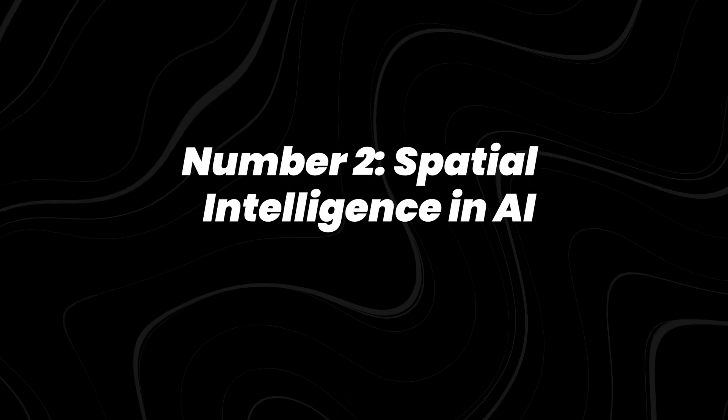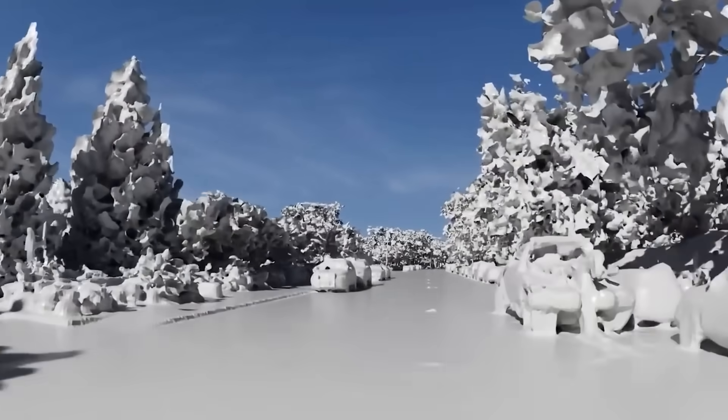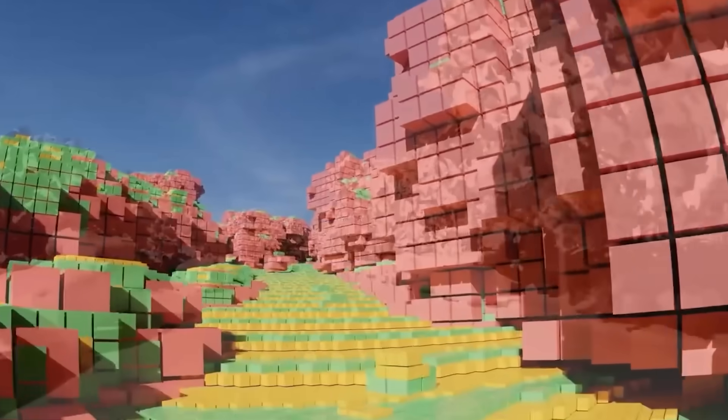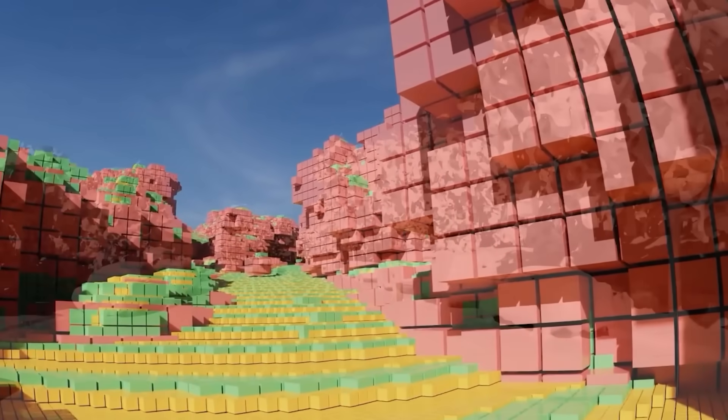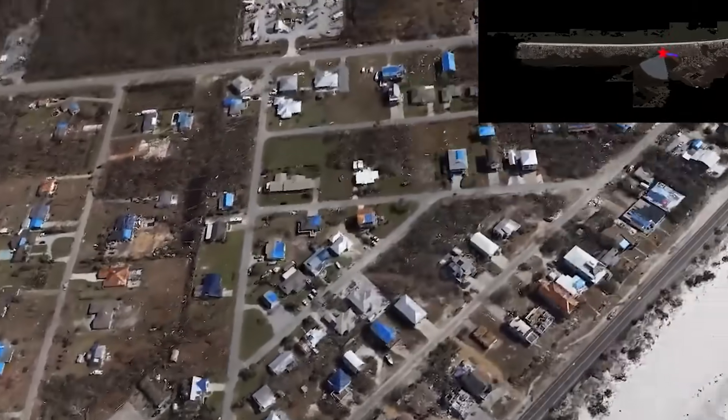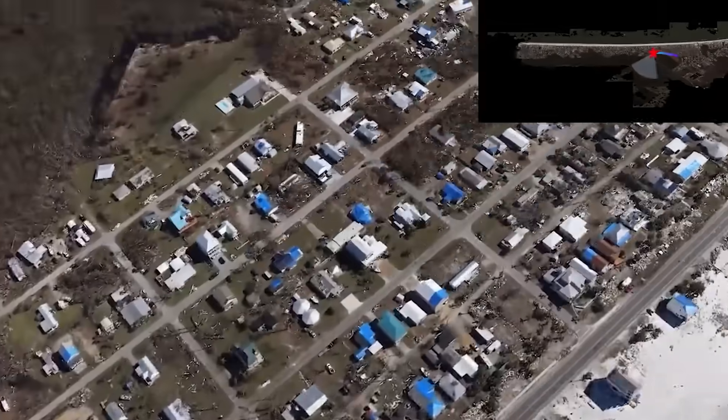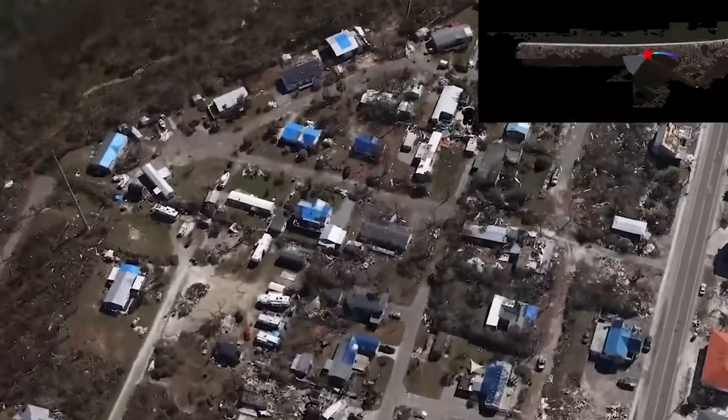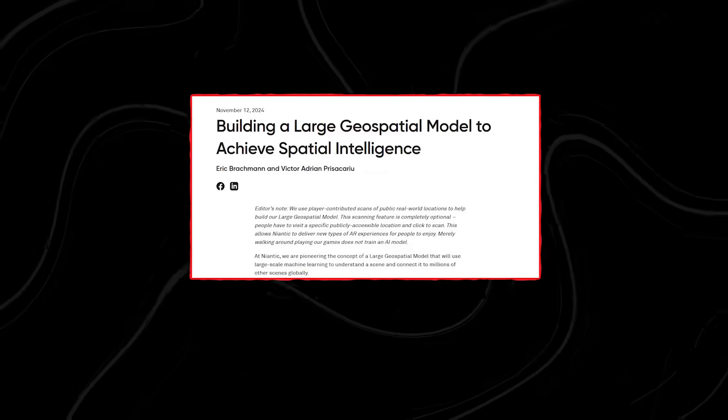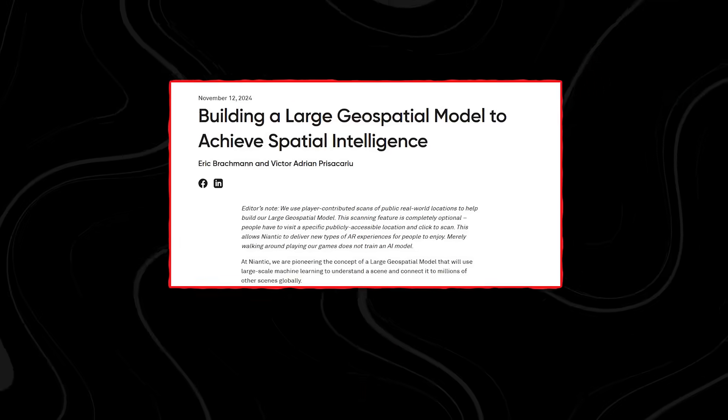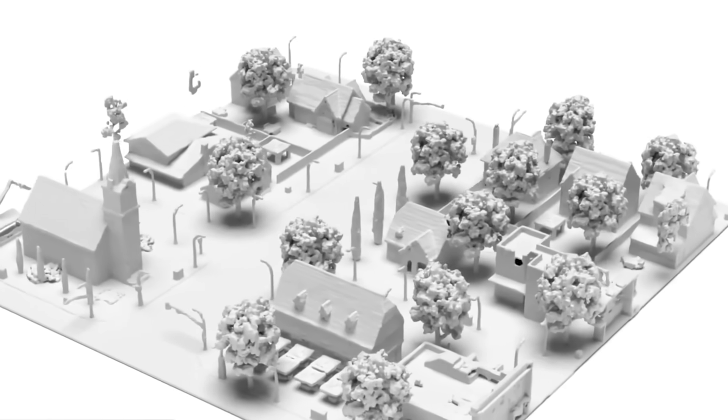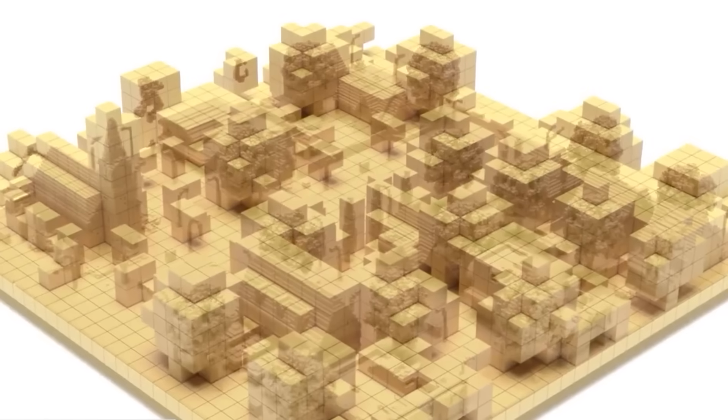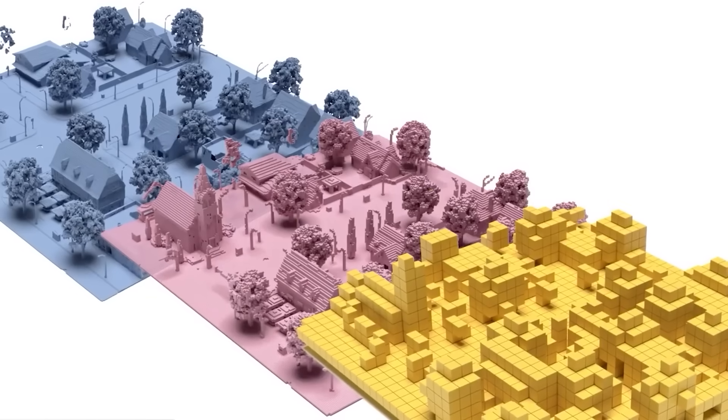Number 2, spatial intelligence in AI. AI isn't only about text or images. It's learning to understand the real world in three dimensions. Large geospatial models and visual positioning systems now provide centimeter-level mapping accuracy. In 2024, companies like Niantic and Google demonstrated how AI can anchor digital content precisely in physical space, while robotics labs applied similar models to improve navigation for autonomous machines.